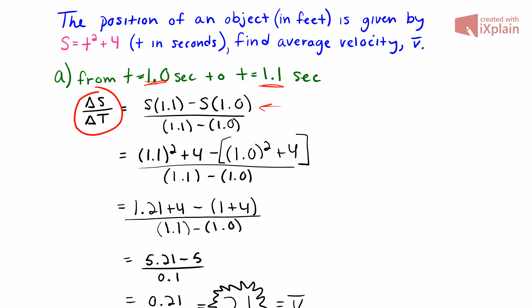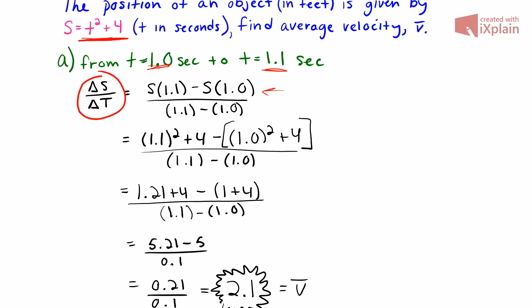I plugged them into the formula. The change in S is going to be this function with the final time, which is 1.1, minus that same function with the initial time, which is 1.0. I wrote it out for you.